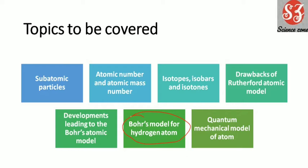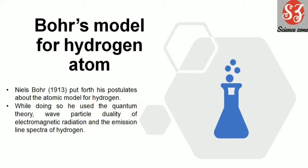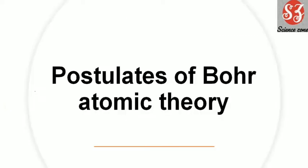Niels Bohr in 1913 put forth his postulates about the atomic model for hydrogen. These are the postulates for Bohr's atomic theory, that is, Bohr's atomic theory of hydrogen.